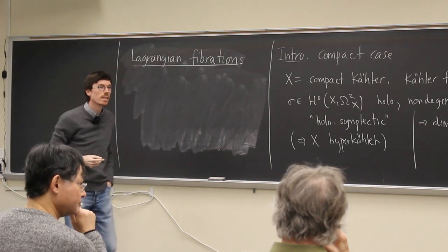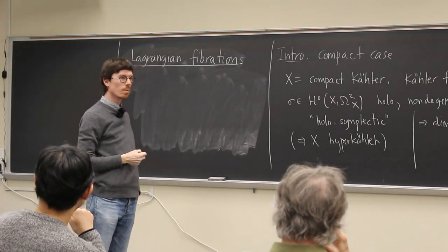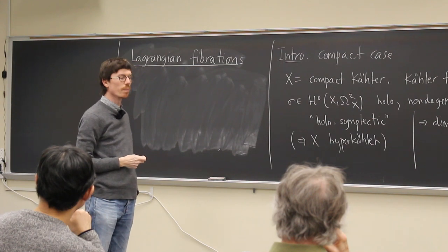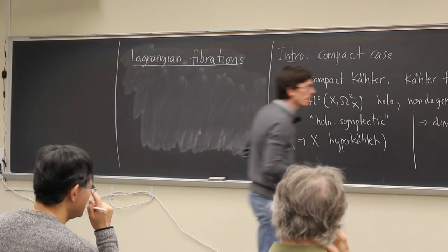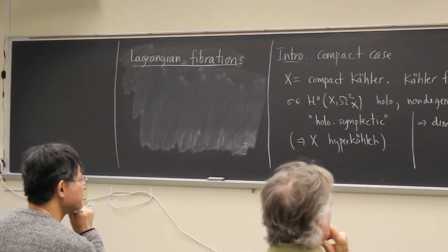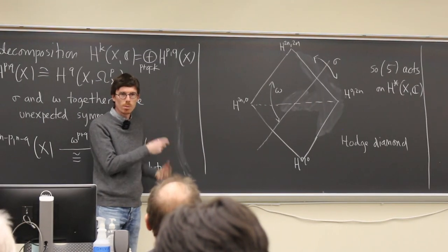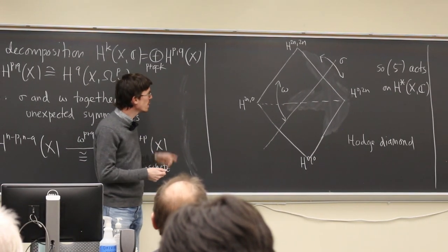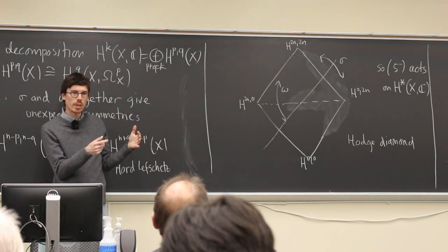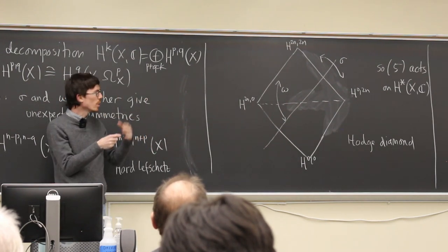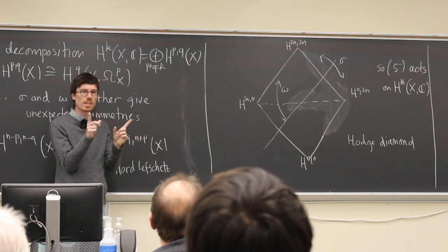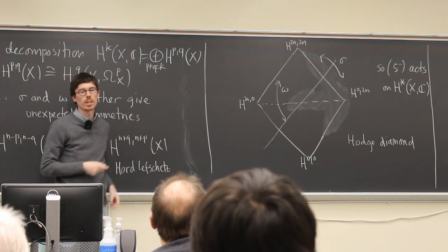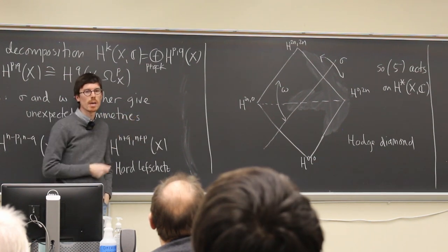This fact that SO5 acts on the cohomology instead of just the usual SL2 was proved by Verbitsky first. The way Verbitsky proved this is: take the hyper-Kähler metric. You have these three different complex structures, you can do harmonic forms that are simultaneously harmonic for all of them, and you get different Lefschetz operators. All of them together generate SO5. His proof actually uses the hyper-Kähler metric.